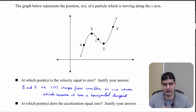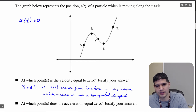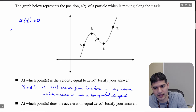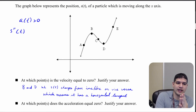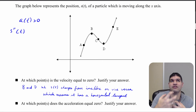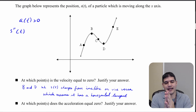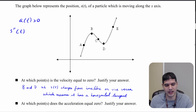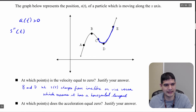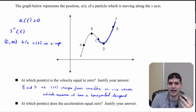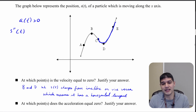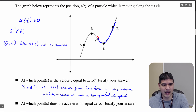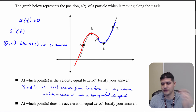When is the acceleration positive? Since a of t is represented by s double prime of t, a positive second derivative means the original function is concave up. So s of t is concave up from c to positive infinity — that's where a of t is positive. On the other end, acceleration is negative when s of t is concave down, which occurs from zero to c. Again, we start at zero because we cannot have negative time.